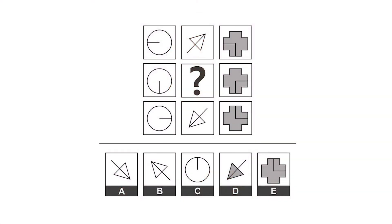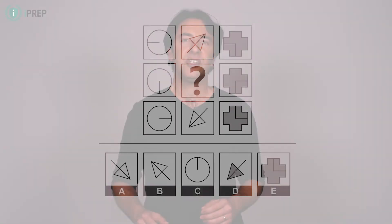Matrix completion. In matrix completion questions, you are presented with a 3x3 matrix of figural elements. One of the elements is missing, and you need to find the missing element within the answers. In most cases, there is some underlying logic in the organization of the elements according to their position by row and by column.